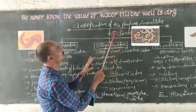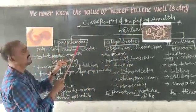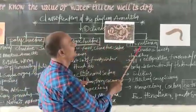Phylum Annelida is divided into three classes. They are Polychaeta, Oligochaeta, and Hirudinea.